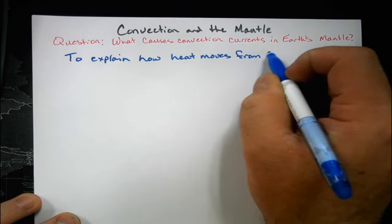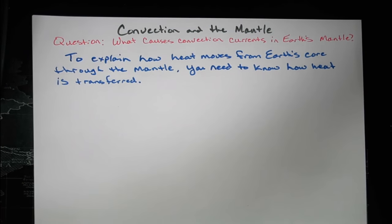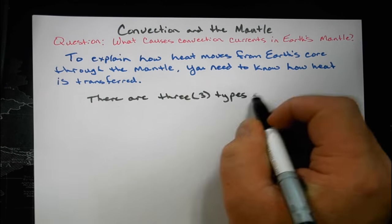To explain how heat moves from Earth's core through the mantle, you need to know how heat is transferred. There are three types of heat transfer.